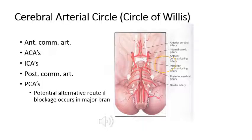The circle of Willis is composed of the anterior communicating artery, the anterior cerebral arteries, the posterior communicating arteries, and the posterior cerebral arteries — it forms a little alternative route. If one of the main arteries is blocked, it's possible for blood to get to the other side. However, those vessels are very small and not normally open, so it requires a slow blockage for those vessels to expand and accommodate blood flow. A sudden blockage would prevent the circle of Willis from opening up quickly enough.